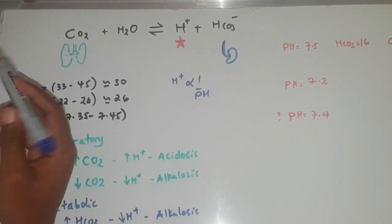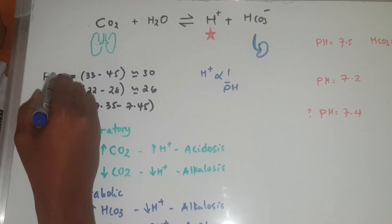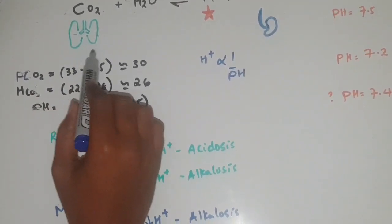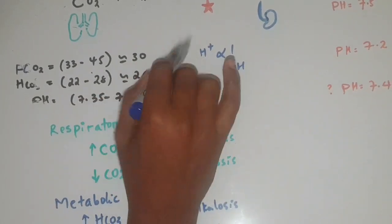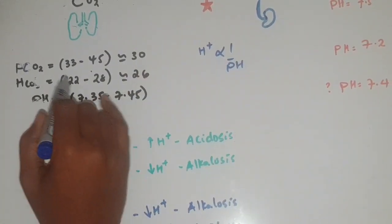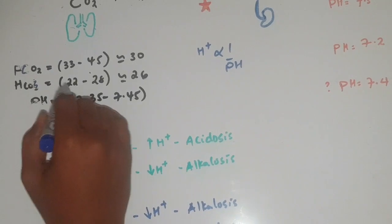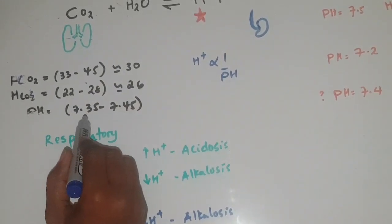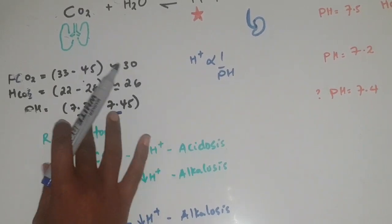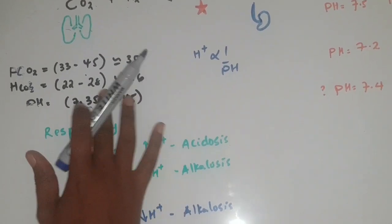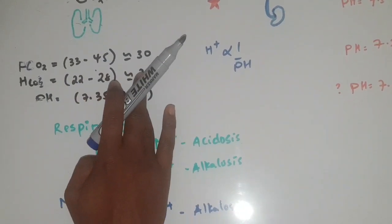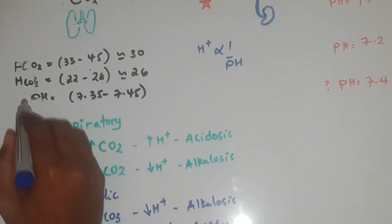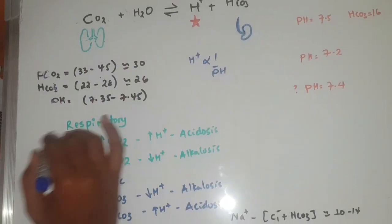For normal values, we use normal PCO2. It can be a normal value. The body is a little bit alkalotic at baseline, and that is what the normal value represents.